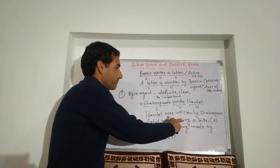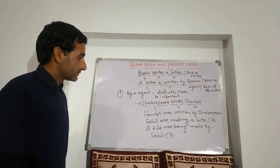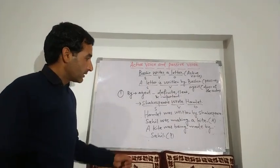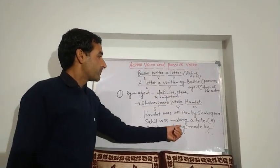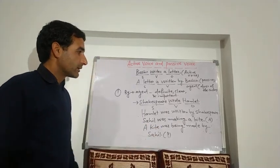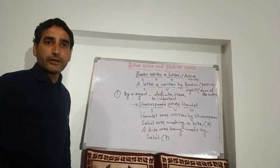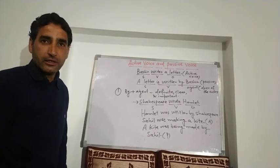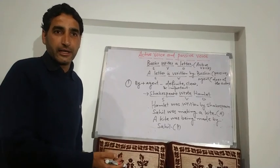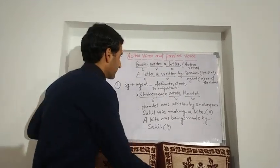Another example: 'A kite was being made by Sohail.' Here again the agent is definite and clear, that is why we use 'by.'